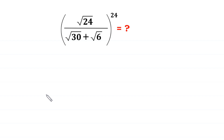Hello, welcome to how to solve this very nice square root algebra simplification problem. We have the square root of 24 divided by square root of 30 plus square root of 6, whole to the power 24.